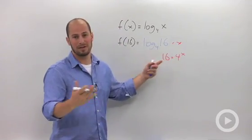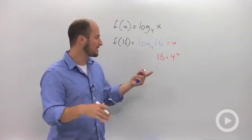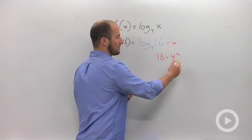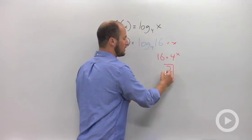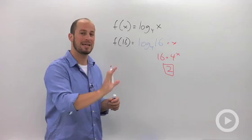You could change 16 to be 4 squared, but hopefully you can recognize that this is just going to end up being x = 2. So 2 is our answer. Remember, we plugged in the x to be our term - we don't actually want x in our answer.